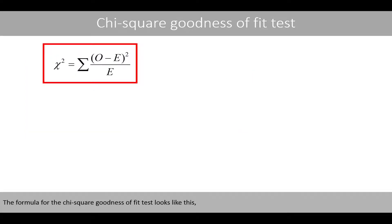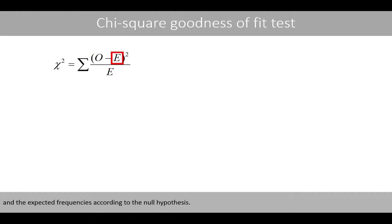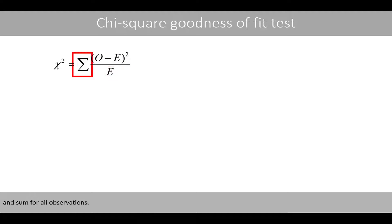The formula for the chi-square goodness of fit test looks like this, where we calculate the squared differences between the observed frequencies and the expected frequencies according to the null hypothesis. We then divide the squared differences by the expected frequencies and sum for all observations.